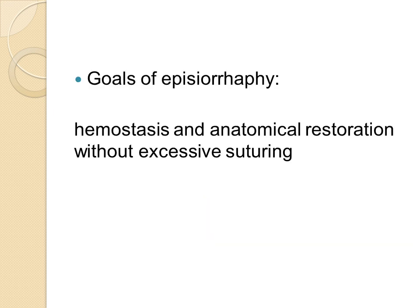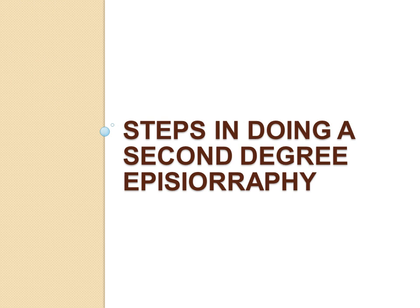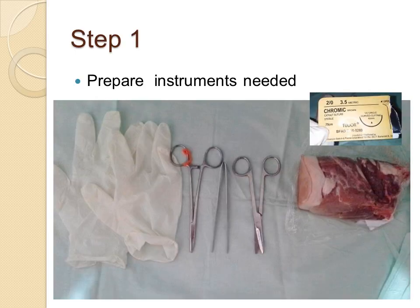The goals of episiotomy repair are to restore hemostasis and anatomical restoration without excessive suturing. Here are the steps in doing a 2nd degree episiotomy repair. Step 1: prepare the instruments needed.